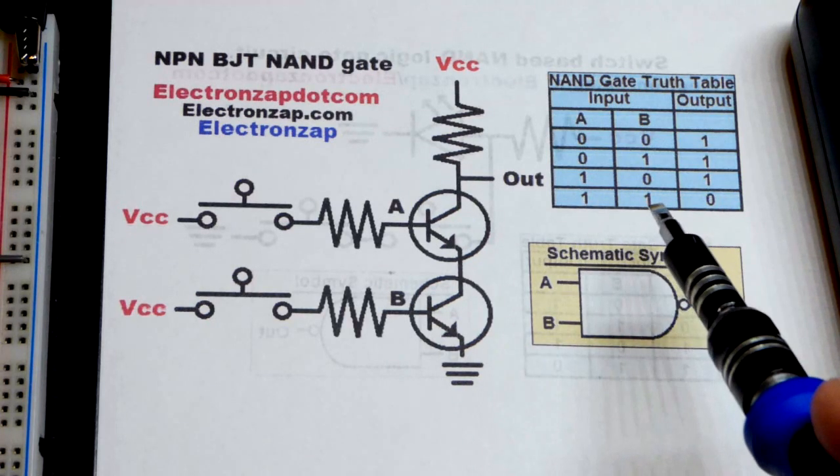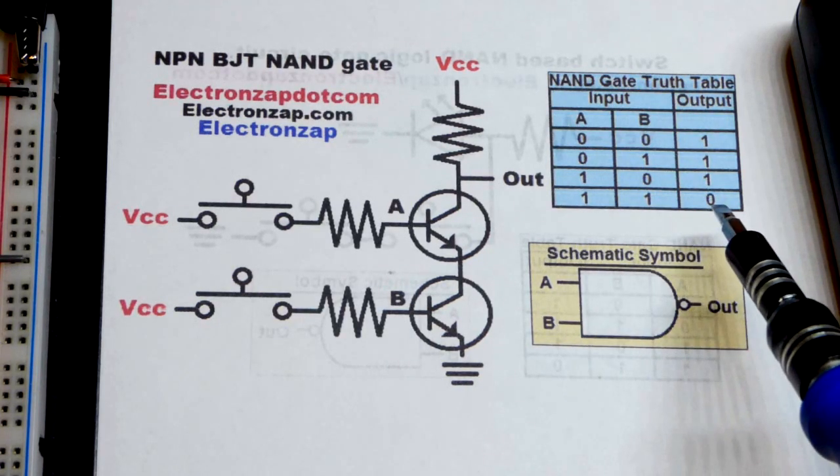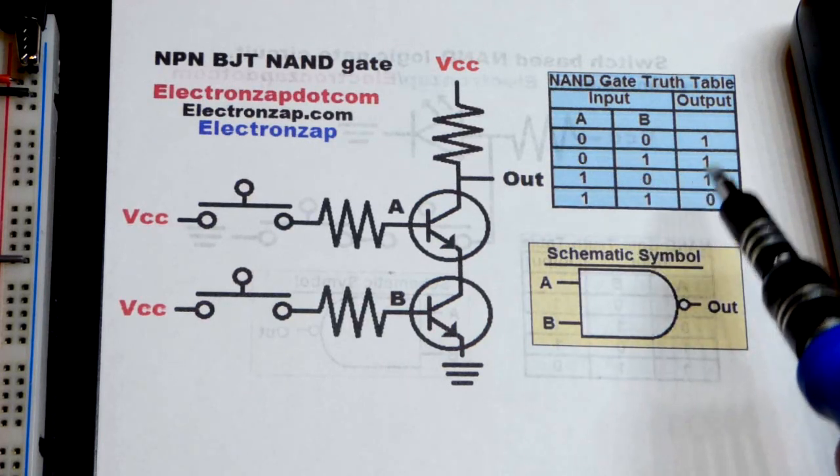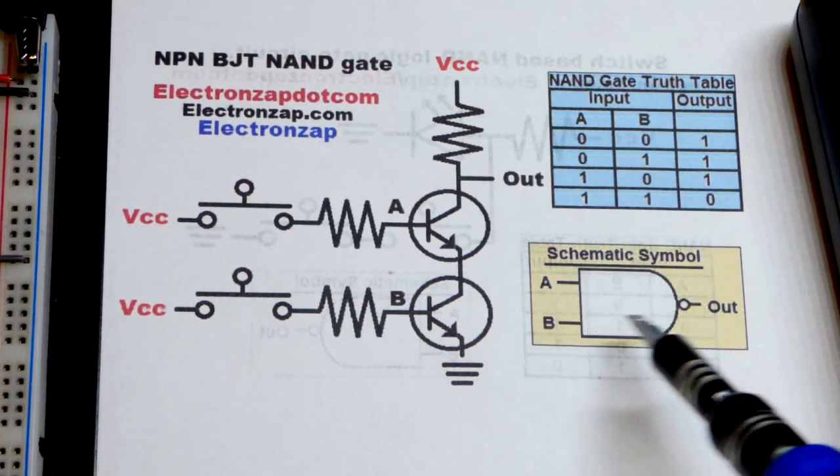So when all inputs are high, the output is going to be low. If any input is low, the output is going to be high. So it's the opposite of an AND.